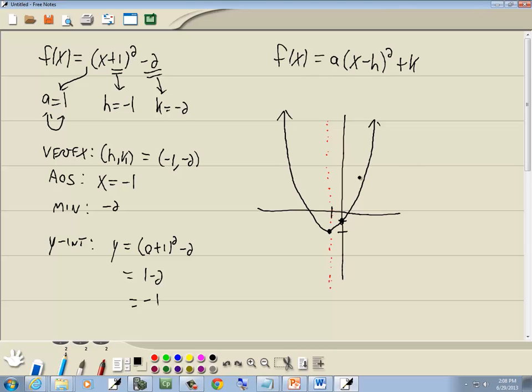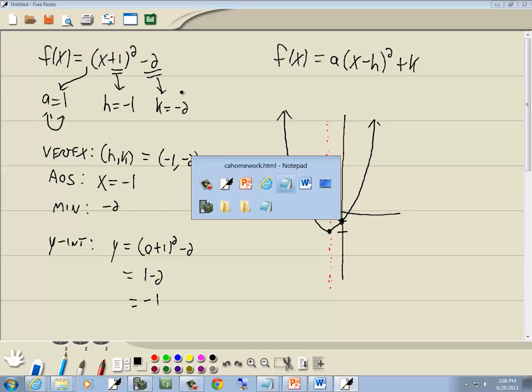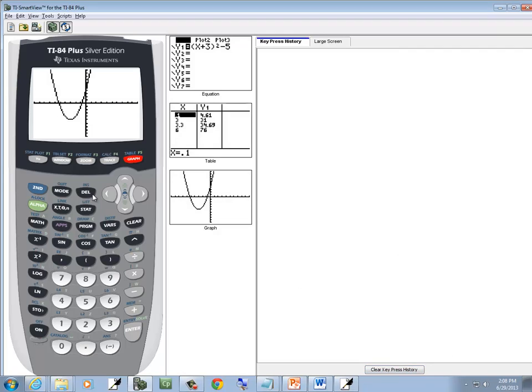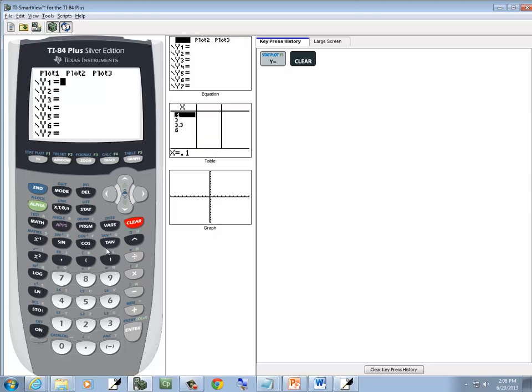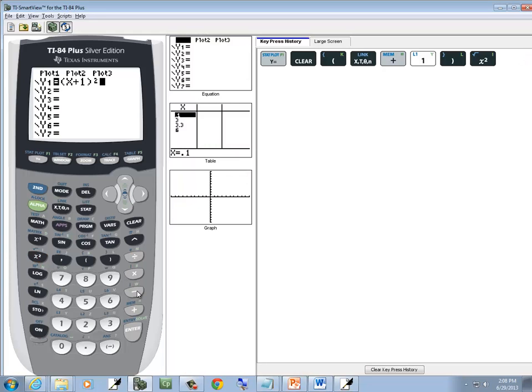Now, for purposes of graphing, you don't have to do it by hand. Just use your calculator. You'll get a much more precise graph. So you press your y equals, press clear, do a beginning parenthesis, x+1, closed parenthesis, x squared, and minus 2. And graph.